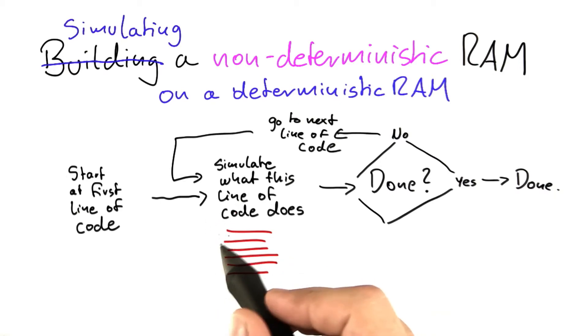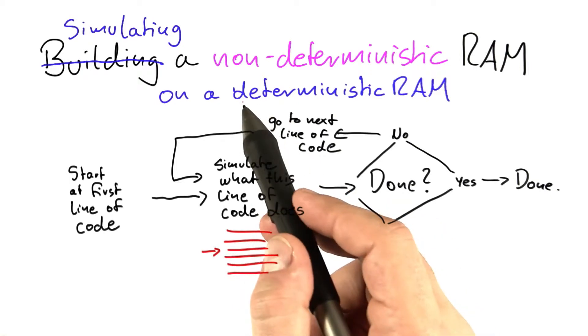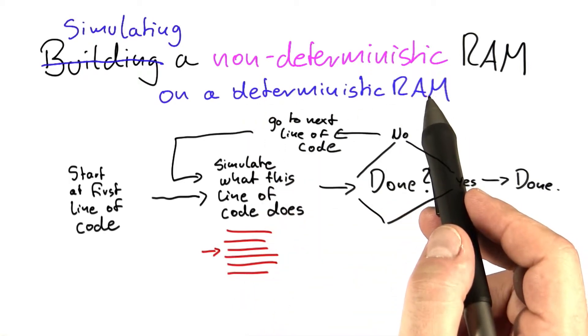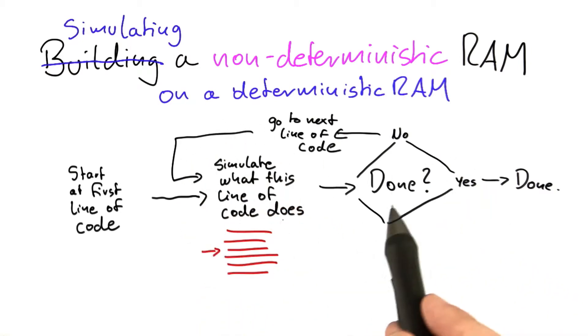Because what happens if you're in a given line of code? There's two different things that can happen. One is it's a normal instruction, such as one you would find on a deterministic RAM. And in this case, the simulator can just go on running the same way that it would have gone for the deterministic RAM.